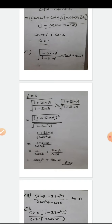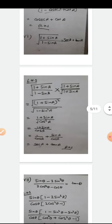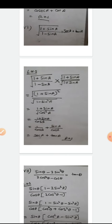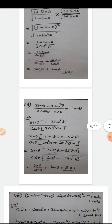The √(1 + sin A)² simplifies to (1 + sin A). The denominator √(1 - sin²A) = √(cos²A) = cos A. Then separating the numerator: 1/cos A + sin A/cos A = sec A + tan A. This equals the right hand side, so LHS = RHS for Part 6.